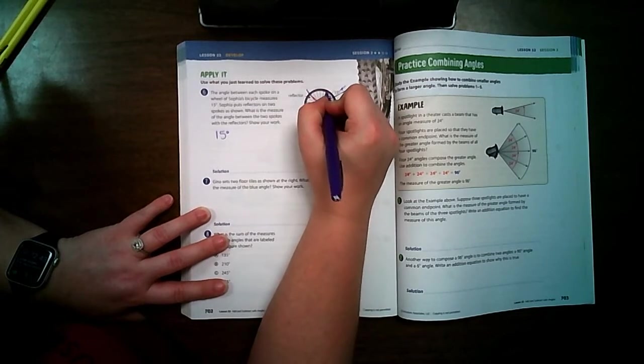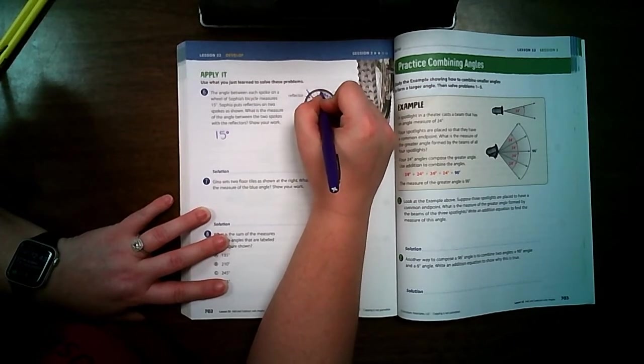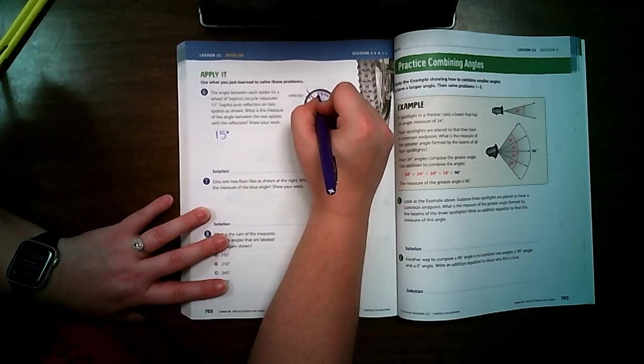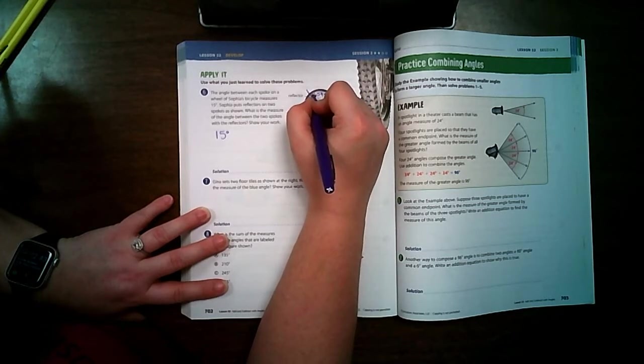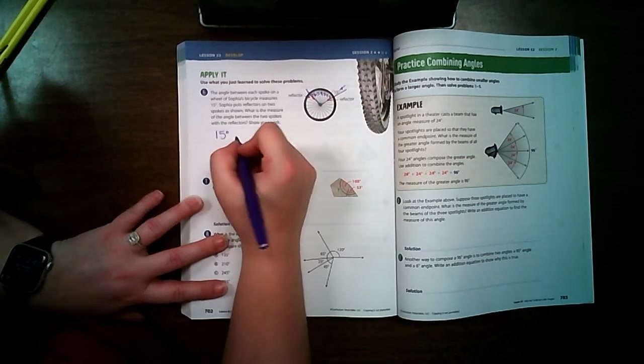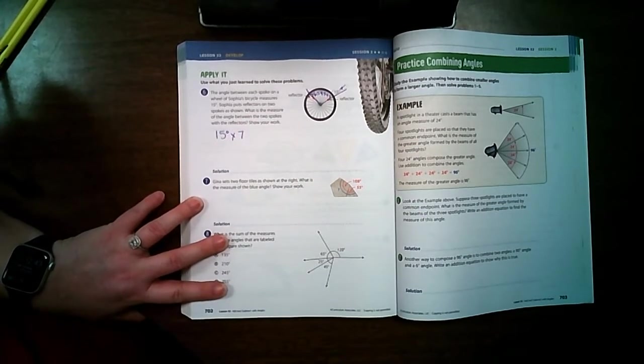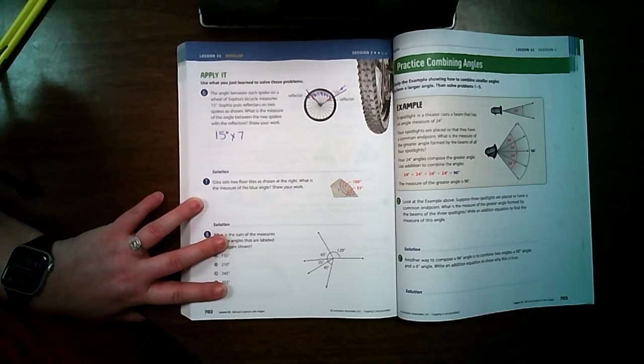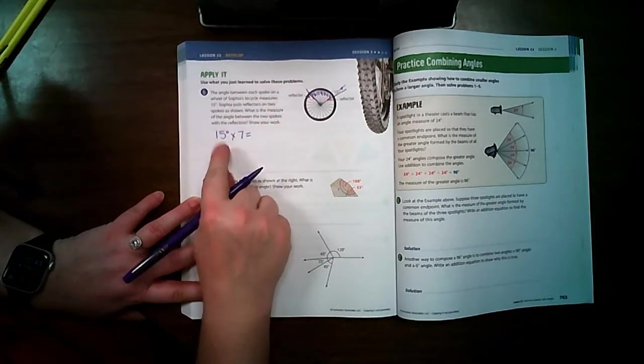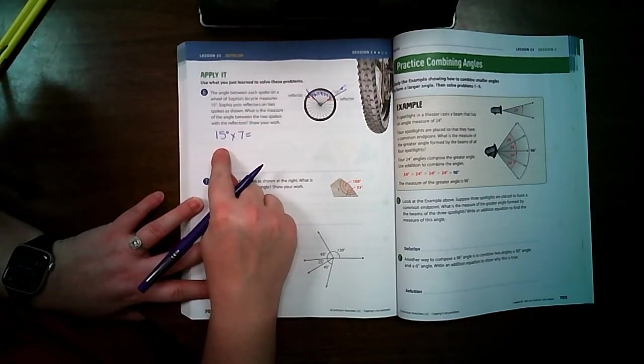One, two, three, four, five, six, seven. So I have to do 15 seven times. Instead of trying to add 15 over and over and over again, I'm going to use my skills of multiplication to solve this problem.